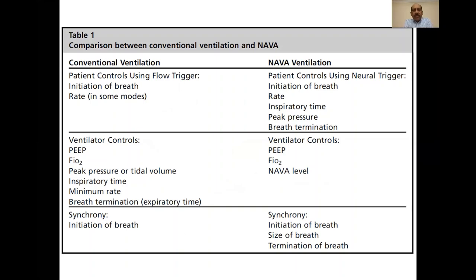Comparing conventional ventilation with NAVA ventilation, the key differences are highlighted in this table. In conventional ventilation, patient flow is the main trigger. In NAVA ventilation, it is the neural signal — the electrical activity of the diaphragm. Because of this, in conventional ventilation only initiation of breath is synchronized, while in NAVA ventilation the initiation of breath, the size of the breath, and the termination of the breath are all three synchronized.